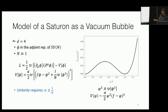The example is a theory with spontaneously broken SU(N) global symmetry, at large N, of a single field. You can choose this field to be in the adjoint representation. This theory has degenerate vacuum states — a vacuum with unbroken symmetry and a vacuum with spontaneously broken SU(N) symmetry.